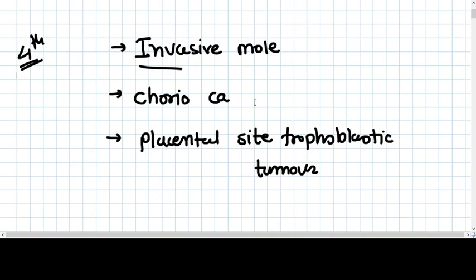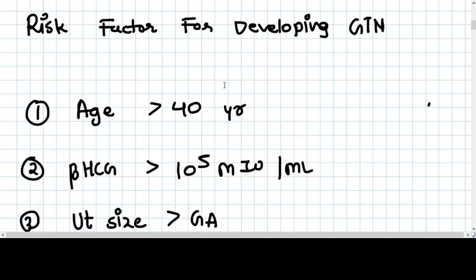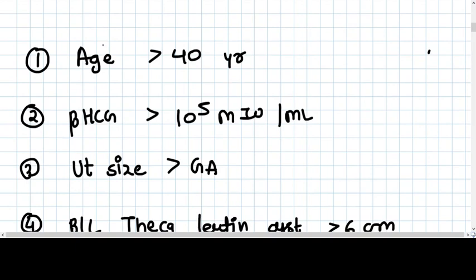In this video we are going to talk about choriocarcinoma, what are the risk factors of developing GTN. When you find a molar pregnancy, you need to find the chances of that molar pregnancy to be converted into GTN, and how you do that by seeing certain risk factors.